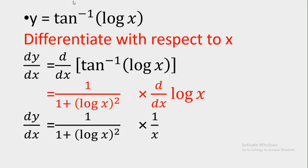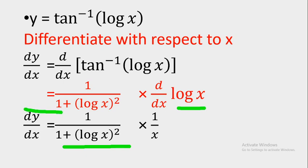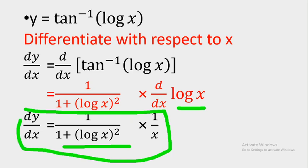So the final answer: dy by dx equals 1 upon 1 plus (log x) whole square, multiplied by the derivative of log x. The derivative of log x is the standard result 1 upon x. So the answer is 1 upon (1 plus (log x)²) times 1/x. This is the answer for y equal to tan inverse of log x.